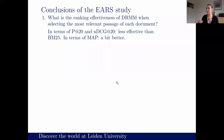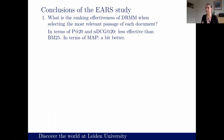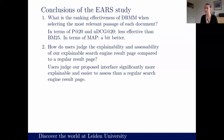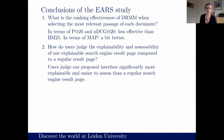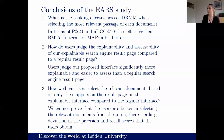The conclusions from this initial study: ranking effectiveness of DRMM when selecting the most relevant passage was less effective than BM25 in terms of precision at 20 and NDCG at 20, but slightly better on MAP — still not convincing. However, it was sufficiently capable for passage explainability. Users rated the proposed interface as significantly more explainable and accessible than the regular interface, but we cannot prove they were actually better at selecting relevant documents.